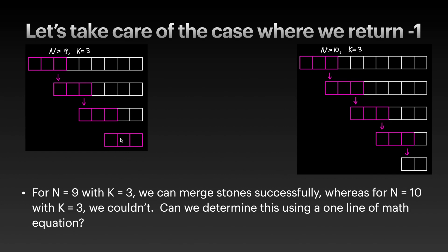For n equals ten, you do the same thing, but notice that when you are left with four stones you can merge the first three, leaving two stones — and you cannot merge two stones. So in this case you have to return negative one.